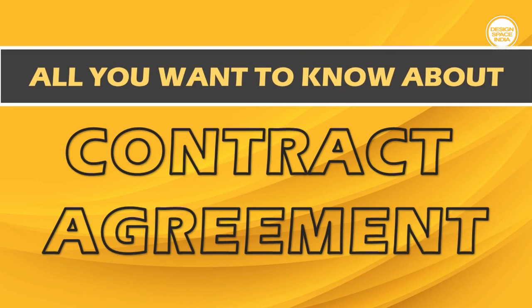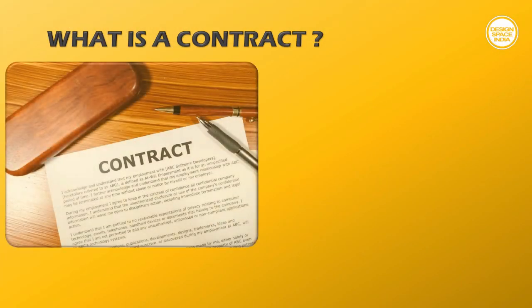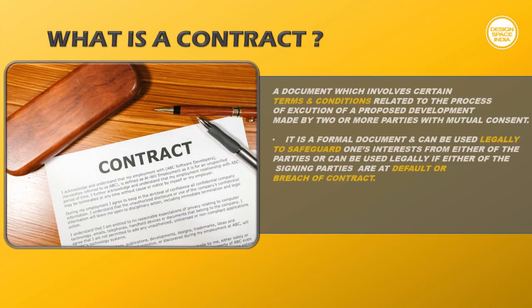Please note that in this context we are only talking about the contract document between the client and the designer. A contract is a document made between two or more parties who mutually agree on a process to be executed with certain terms and conditions. It is a formal document and can be used legally to safeguard one's interests if either of the signing parties fail to do their part of roles and responsibilities. This helps the party at loss to dissolve the contract with termination clauses.